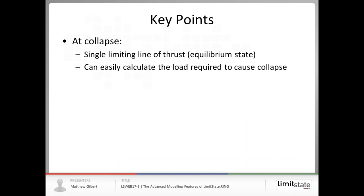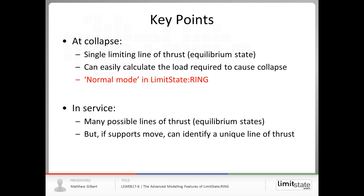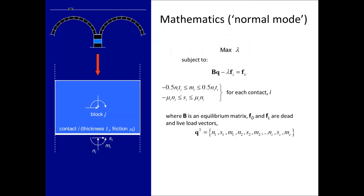At the point of collapse due to overloading, we've got a load forcing the line of thrust to touch the extremities of the masonry at four locations. At this point we get collapse—we can't put any more load. At this juncture, we can uniquely determine the line of thrust and the load required to cause collapse. Similarly, if we move those abutments outward, again we can determine the line of thrust uniquely. So key points: at collapse, we have a single limiting line of thrust. It's relatively easy to calculate the load required to cause collapse—that's the normal mode in LimitState Ring. However, if the supports move, we can identify a unique line of thrust, which corresponds to support movement mode.